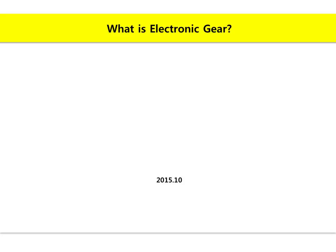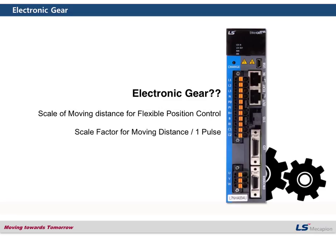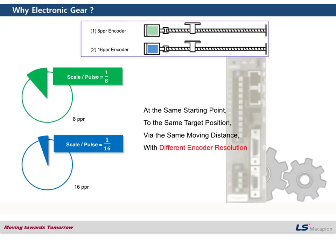Today I'm going to talk about the electronic gear — the subject is what is the electronic gear. I'm going to explain just the concept of electronic gear for customers who are not familiar with this function. The simple meaning of electronic gear is to set the scale of moving distance against one pulse.